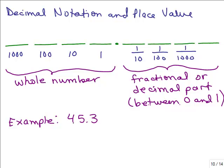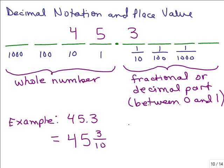So with 45.3, a lot of us just read it as "forty-five point three," but the whole number part is 45, and the 3 is one place after the decimal point — it's in the tenths place. So this is really just 45 and 3 tenths. Before doing more like this, let's work on some problems that only have digits after the decimal point — numbers between 0 and 1.